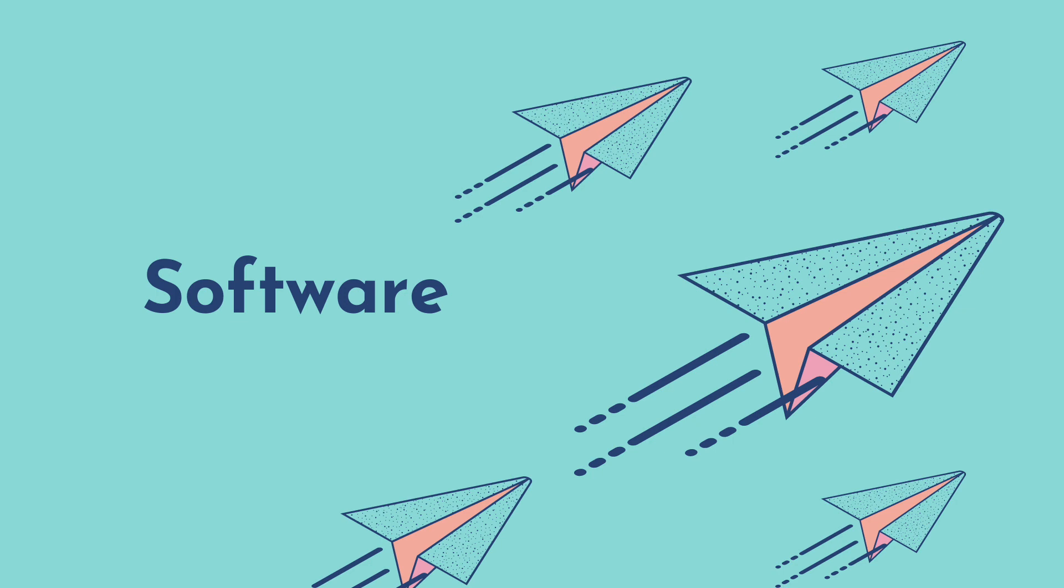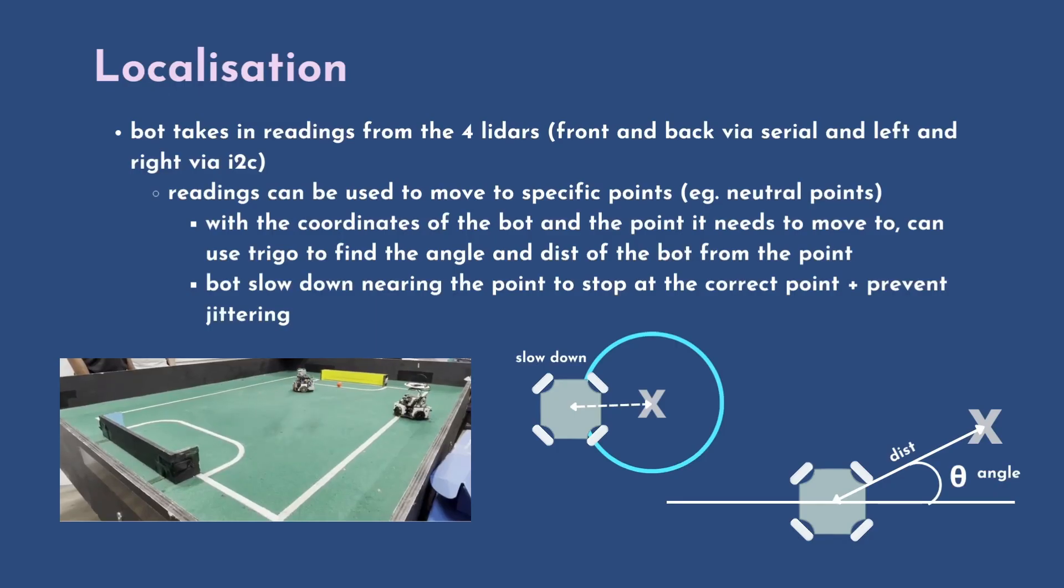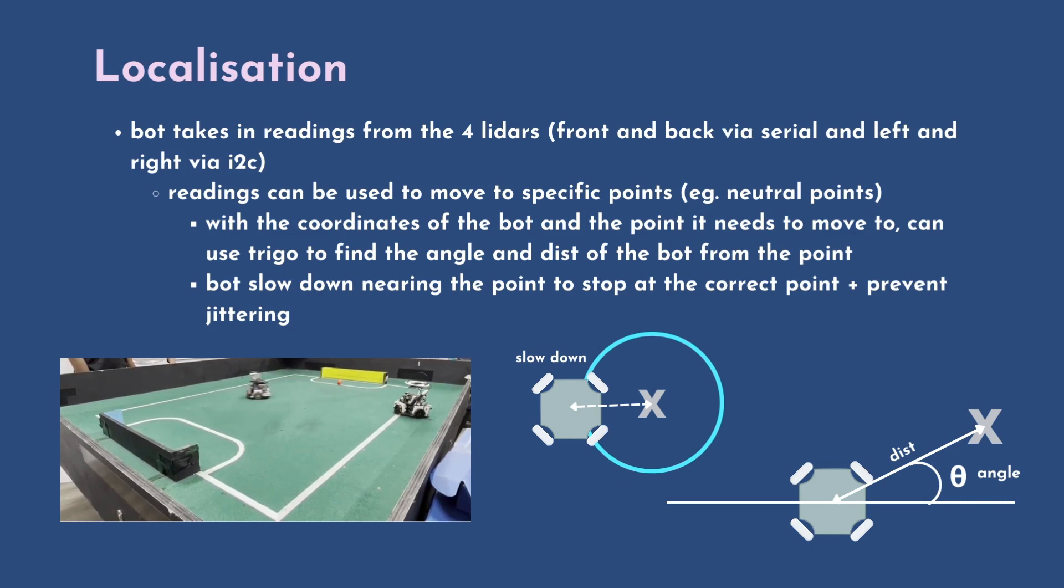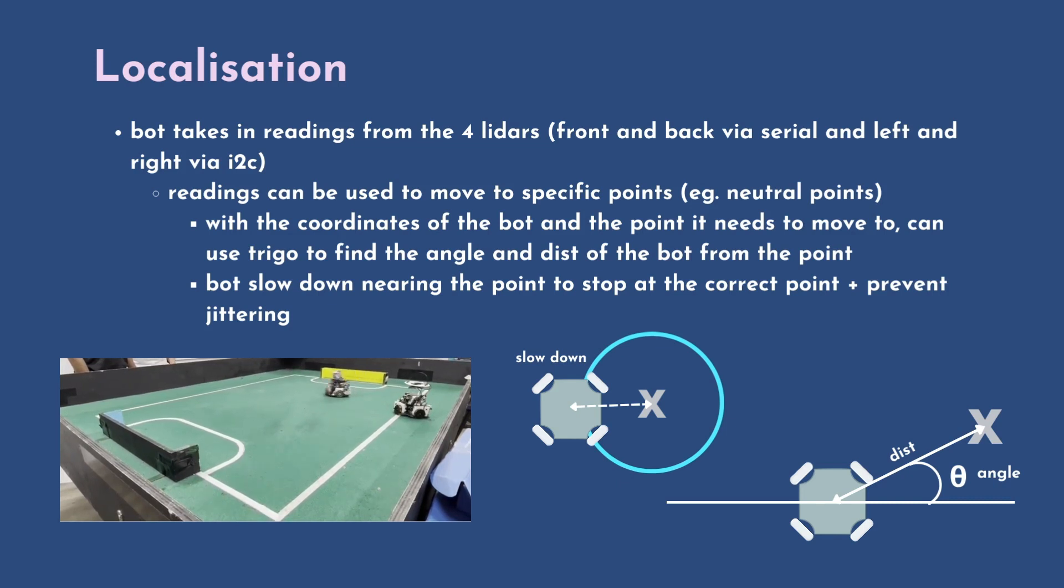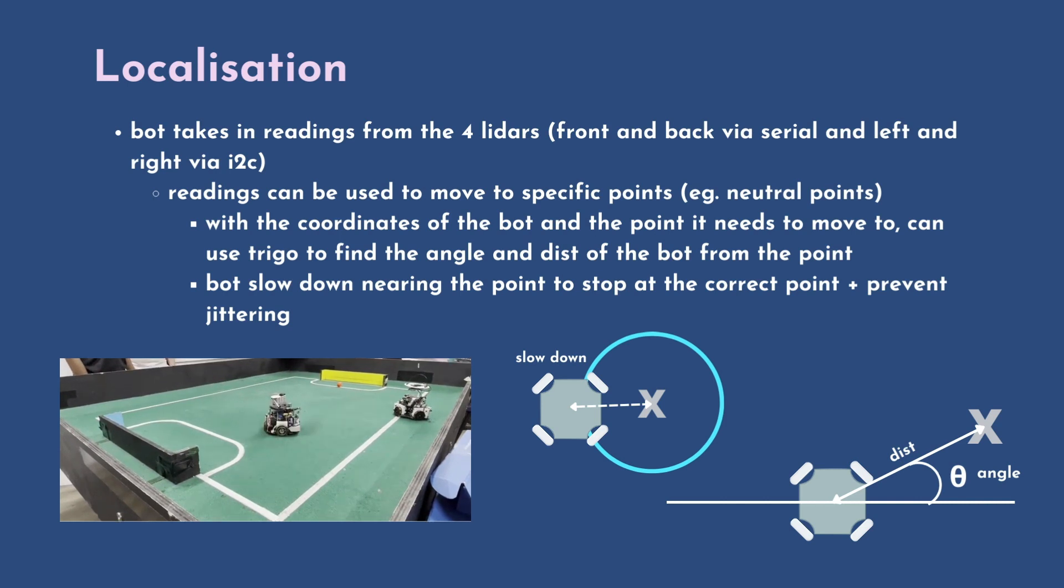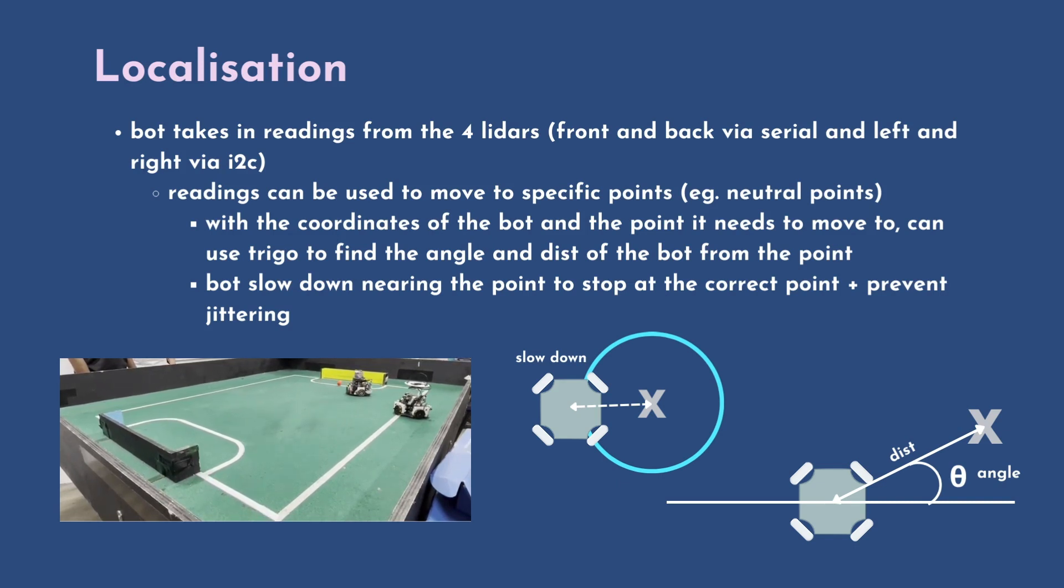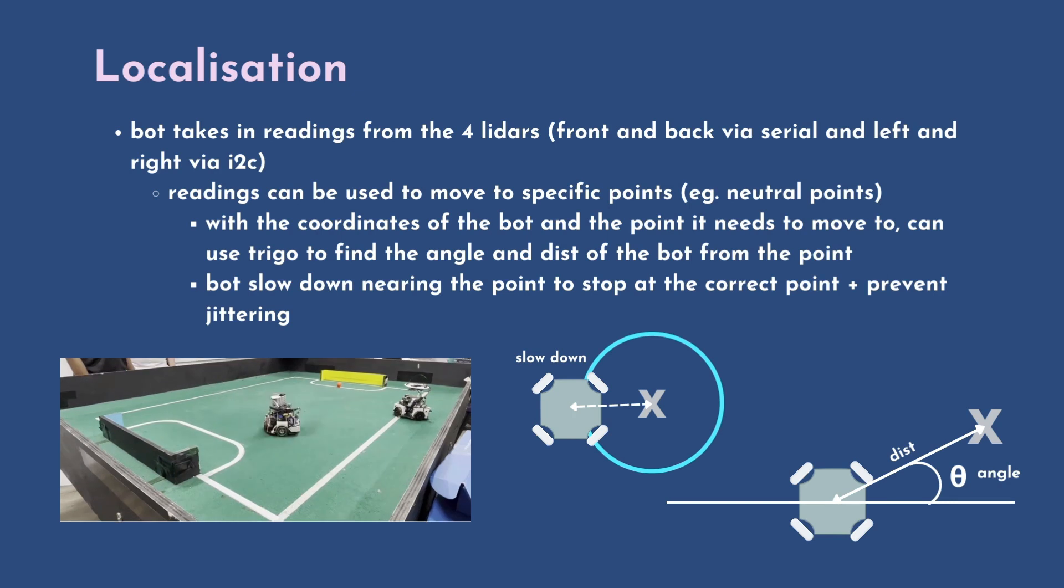Next, we'll be moving on to the software components. First, we have our localization function. Our board has four lidars and the readings will be taken in from all four lidars, via serial for front and back lidars and I2C for left and right lidars. The readings can be used to move to specific points, for example the neutral points, and the readings can also be used to get the coordinates of the board, since we already know the coordinates of the points that we want to travel to. Thus, we can use Trigo to find the angle and distance the board needs to travel at in order to reach the point. We also implemented a slowdown function when we are within a certain radius of the point, to ensure that the robot stops at the exact position and to prevent jittering of the robot as well. Here you can see a video of our board executing this function.